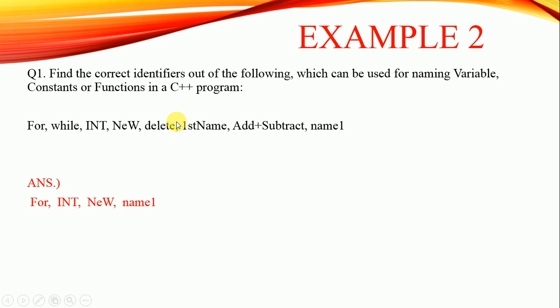Next one: '1stName' - first name is not a keyword, but it is not fulfilling the rules or conventions of an identifier as the first character is a digit. In case of identifiers, the first character must be non-digit - it could be a character or an underscore. Next one: 'Add+Subtract' - it is not a keyword, but again it's containing the symbol plus, and we cannot use plus in the name of an identifier.